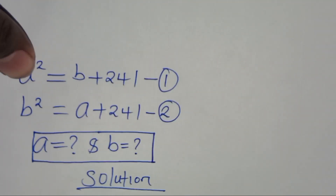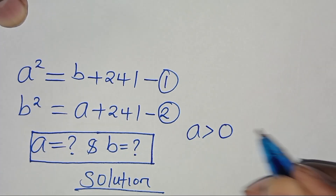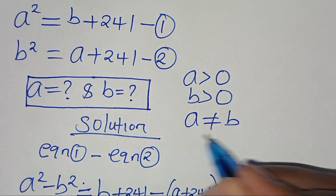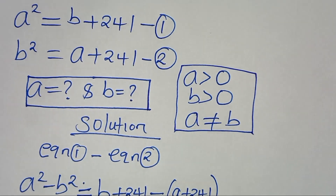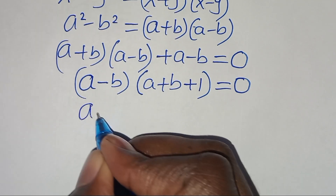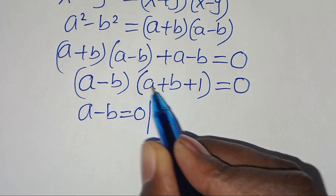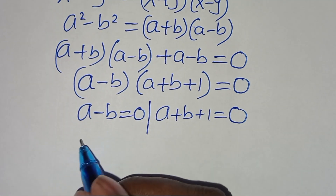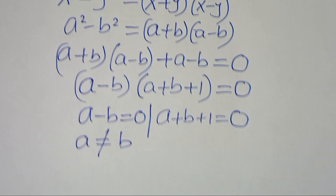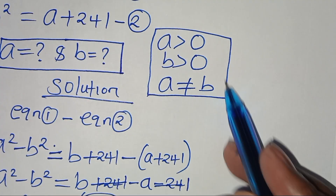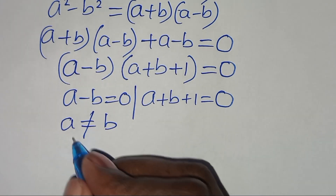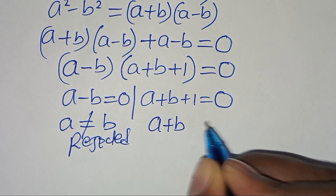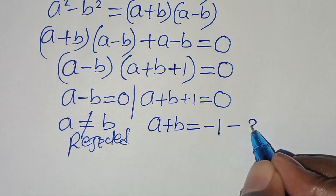We need to note that a is greater than 0 and b is greater than 0, and also that a is not equal to b. So the first factor gives a equals b, but this violates the condition that a is not equal to b — so this part is rejected. Therefore, from the second factor, a plus b equals minus 1. Let's call this equation 3.